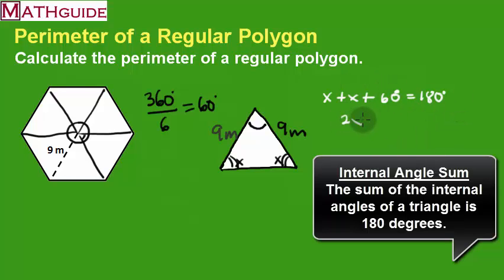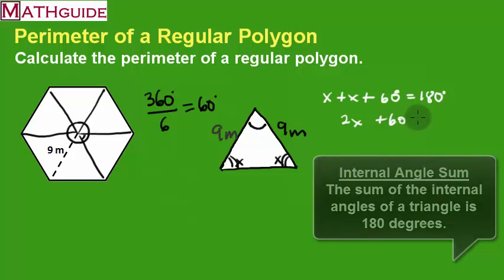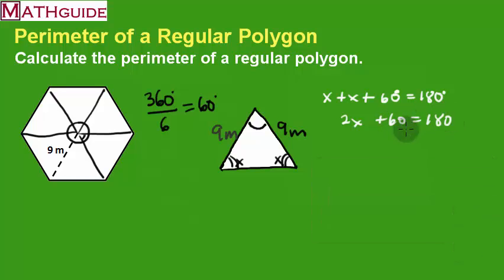So, I'm going to do a little math. I get 2x plus 60 equals 180. I subtract 60. I divide by 2. I get 60.